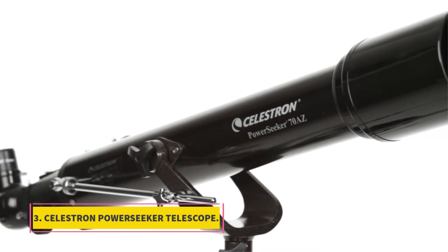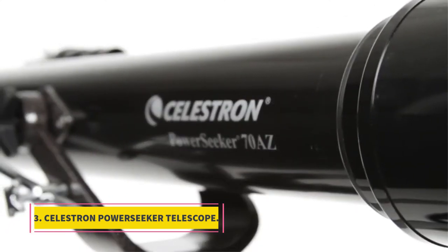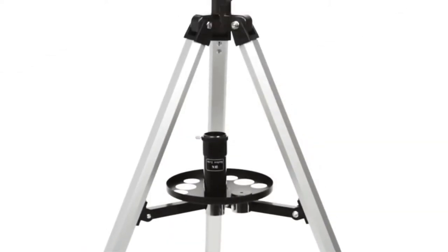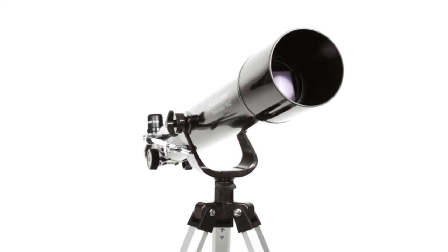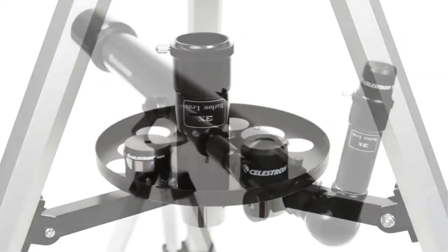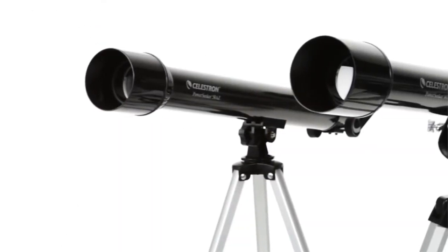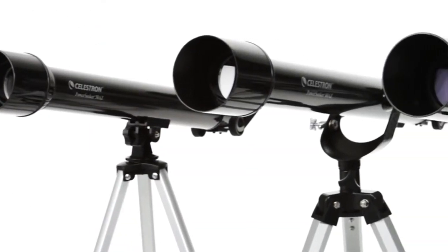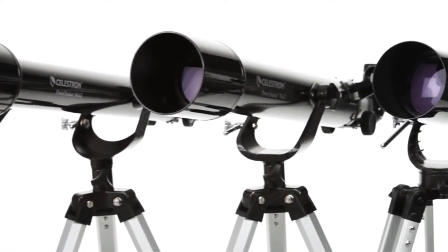At number 3, Celestron PowerSeeker Telescope. The solid Celestron PowerSeeker 70 telescope has all the features required for a beginner and casual astronomer. Despite the low cost, the PowerSeeker 70 offers all the specs needed for good magnification and clear images that improve your view of the nighttime skies. The user-friendly scope is very easy to set up and is a great option for anyone wanting to start their astronomical journey.